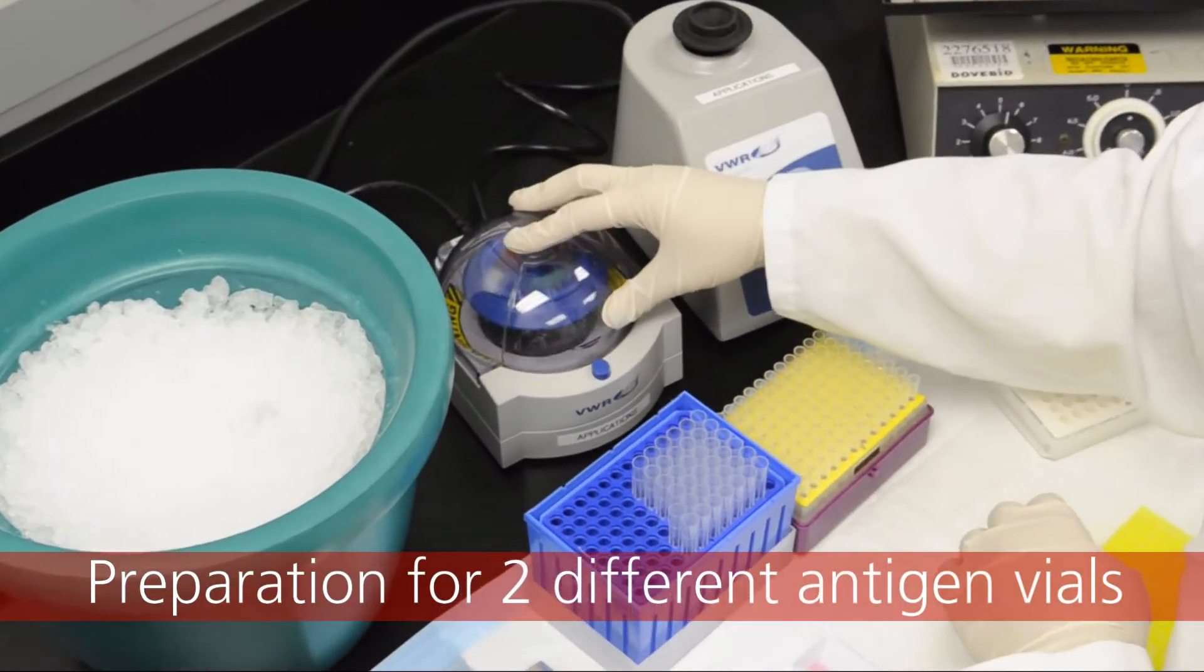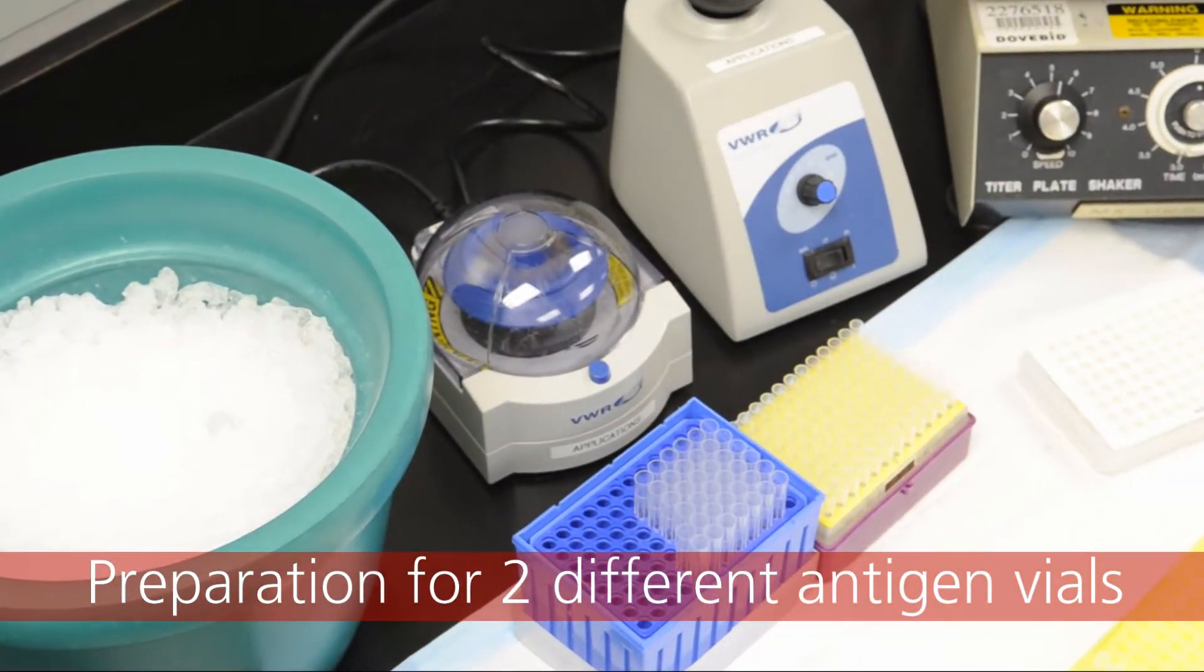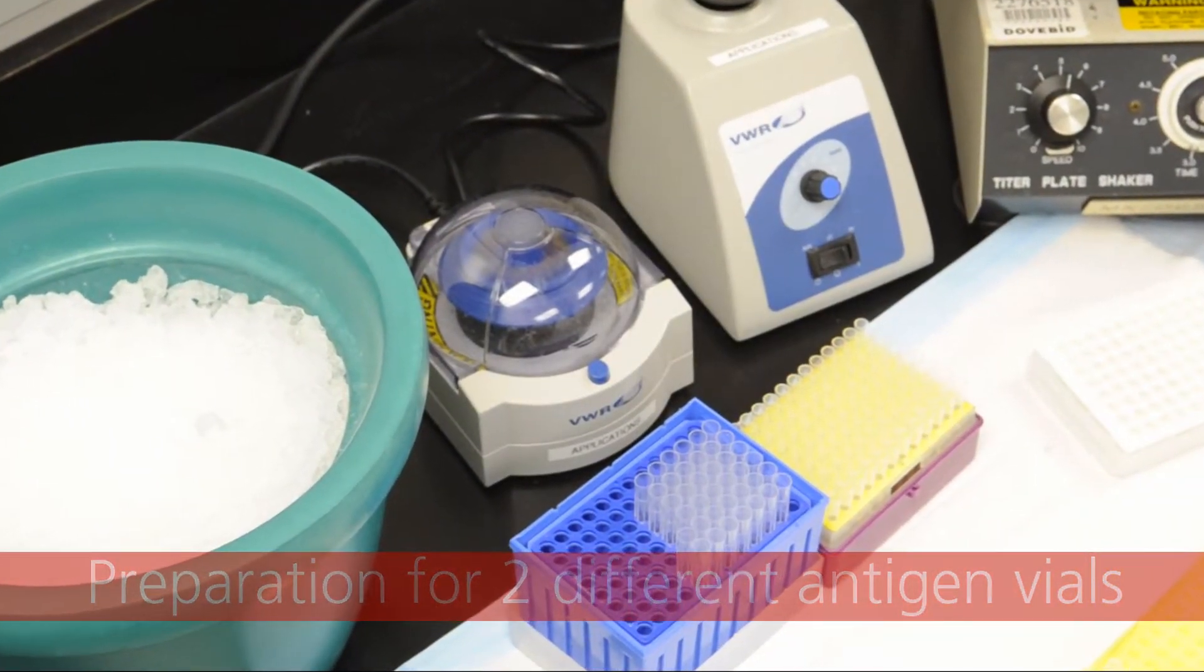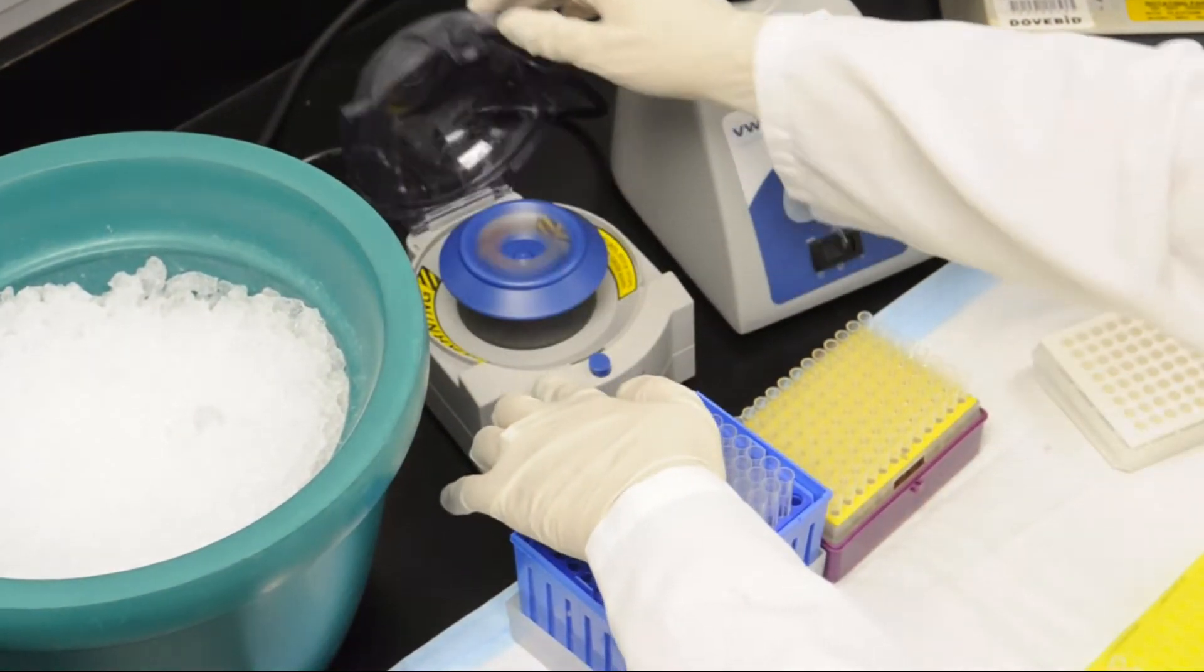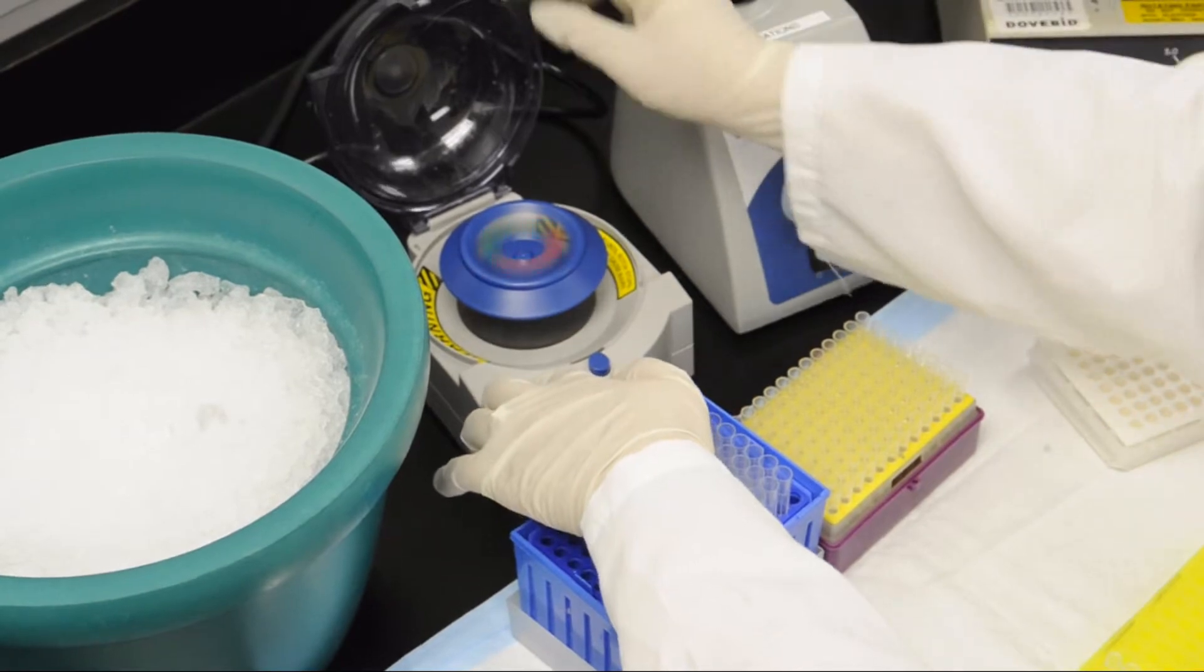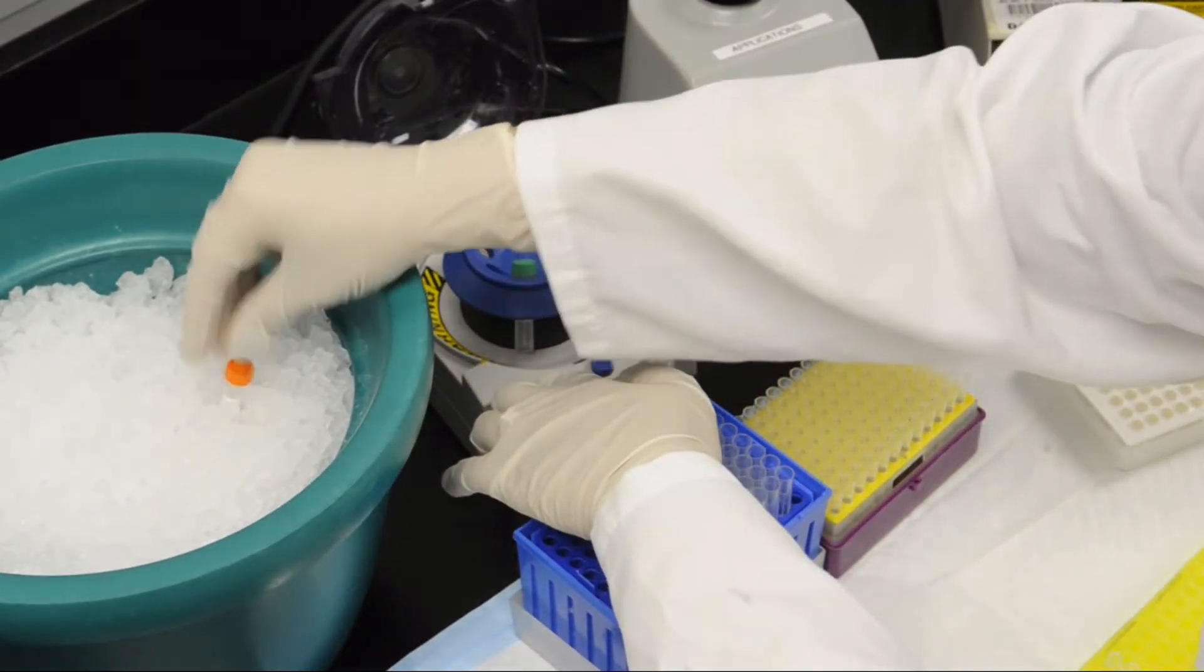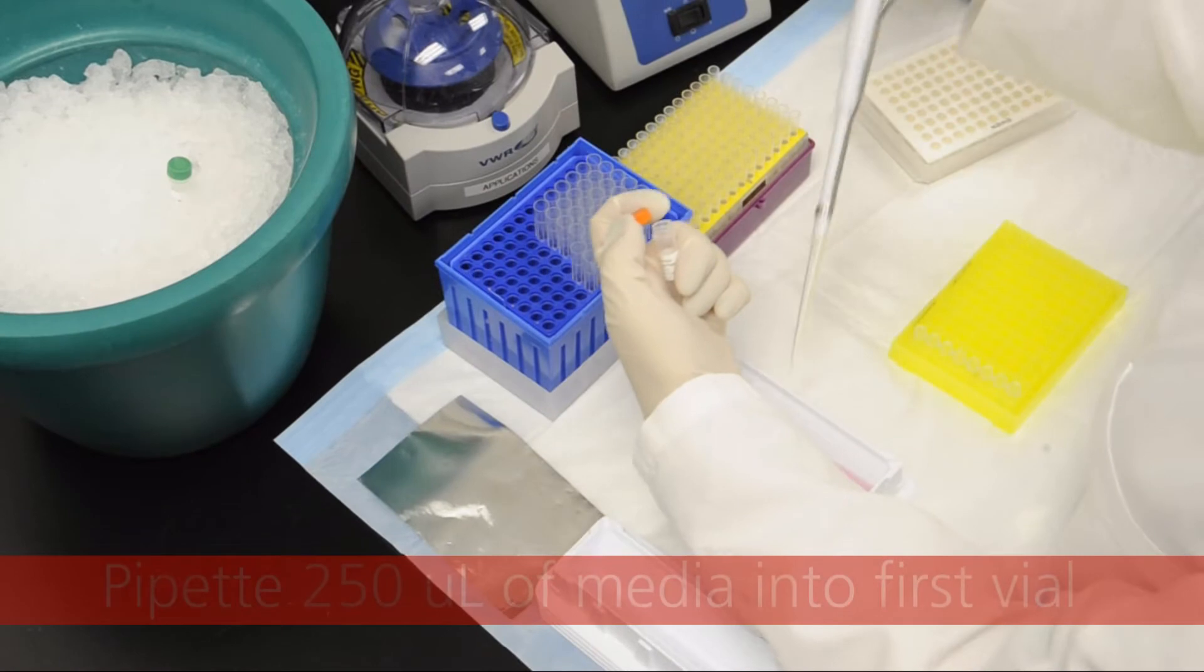This tutorial will demonstrate the preparation of the antigen standards from two different lots of premix antigen standards for use with cell culture supernatant samples. Quickly spin the two antigen tubes to centrifuge the lyophilized antigens to the bottom of the tubes.